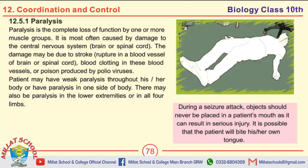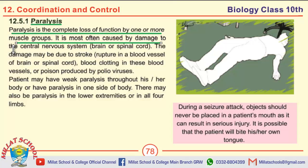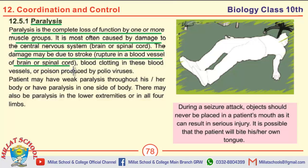Next is paralysis, which is a nervous disorder. Define paralysis and write its causes. Paralysis is the complete loss of function by one or more muscle groups. It is most often caused by damage to the central nervous system — the brain or spinal cord. The damage may be due to rupture in blood vessels of the brain or spinal cord, blood clotting in these blood vessels, or poison produced by polio viruses.